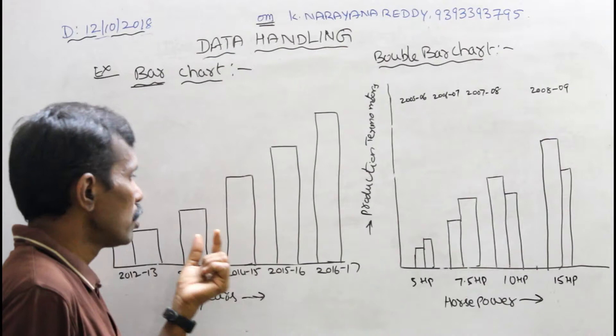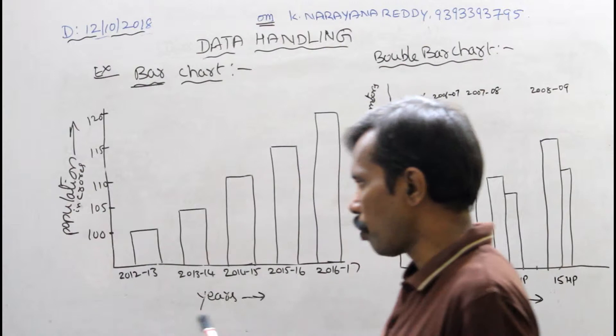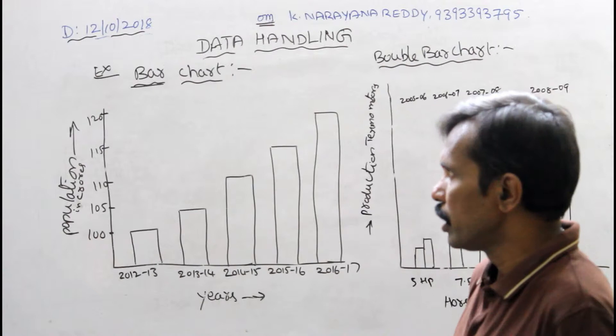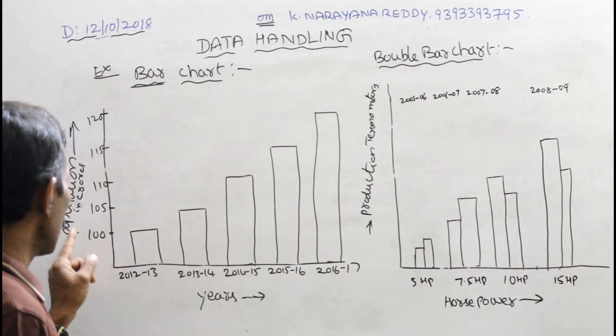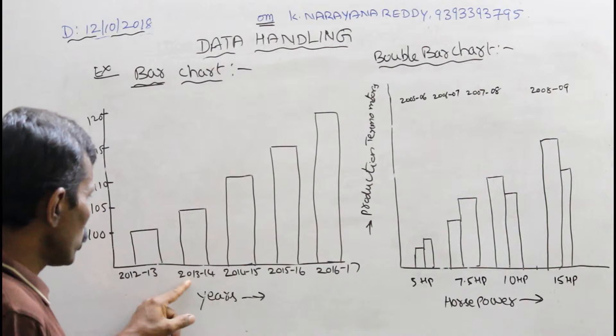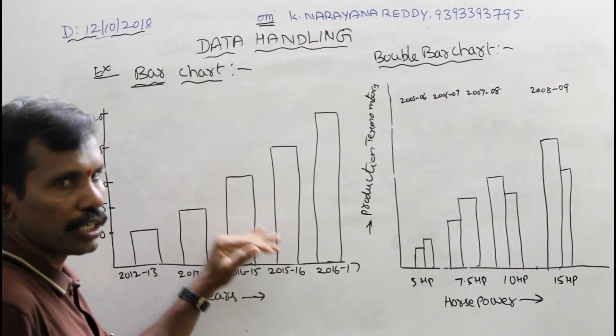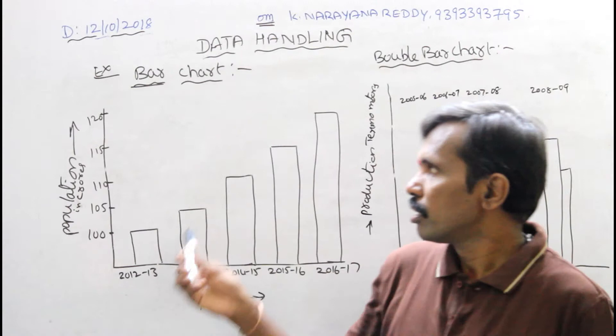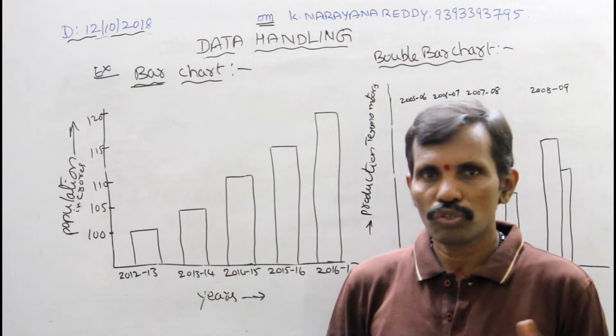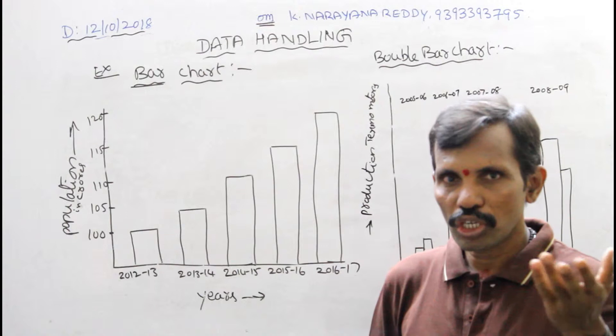See here — production in crores, population in crores, in years, in India. Suppose in 2012–2013, population is 100 crores, and in 2013–2014, population is 105 crores. So gradually, population is increasing in India during these years. In this way, you can show the data in the form of a diagram — that is called a bar chart. There are so many charts, but this is one type — a bar chart, which is also a type of graph.